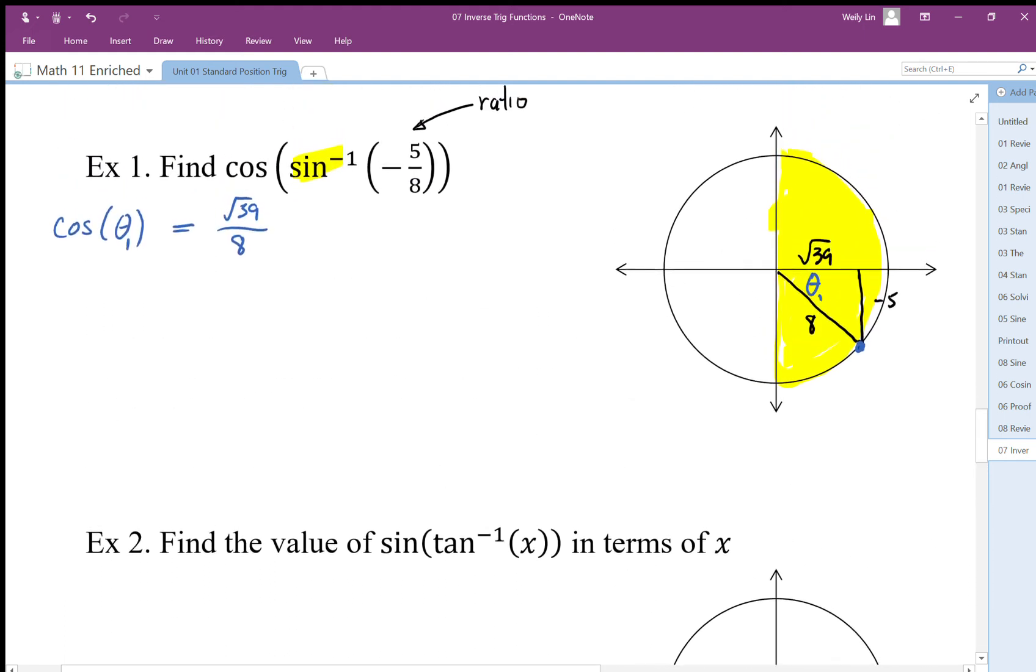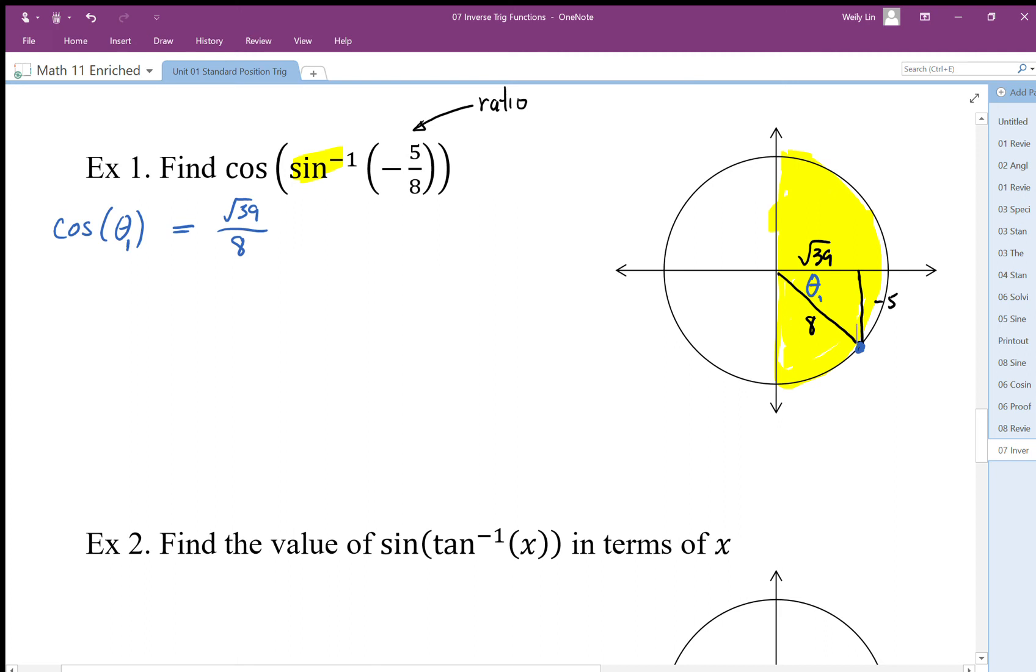The big idea again is: is my input here a ratio or angle? If it's a ratio, I need to be able to draw it, understand the quadrants that arcsine or arctan or arccos are defined in, and then we can just find the ratio, the exact ratio, based on that angle in position. We don't actually have to find the angle, we can just use this shape, the position of that blue dot.